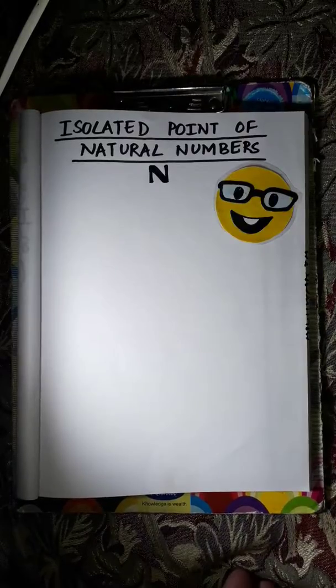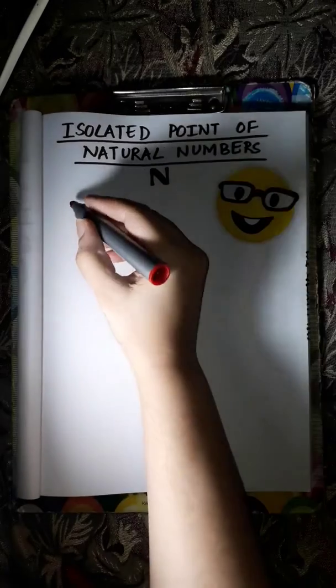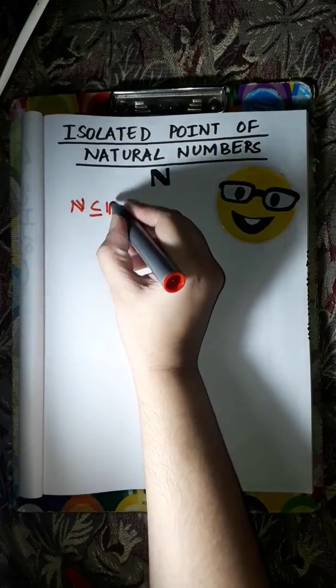By the definition of isolated points, we know that the set of natural numbers is acting as A, and N is the subset of R.